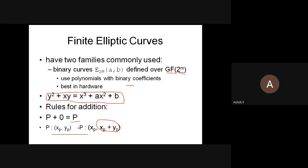So this is the three parts. The elliptic curve can be defined in three ways: using real numbers, using the prime curve or prime numbers, and using the finite field.